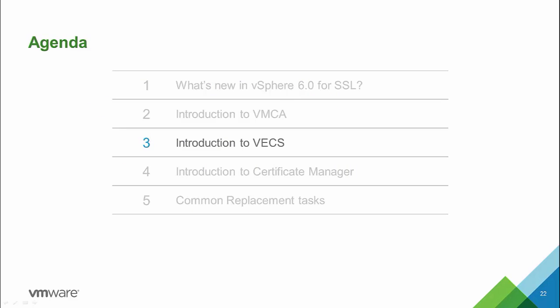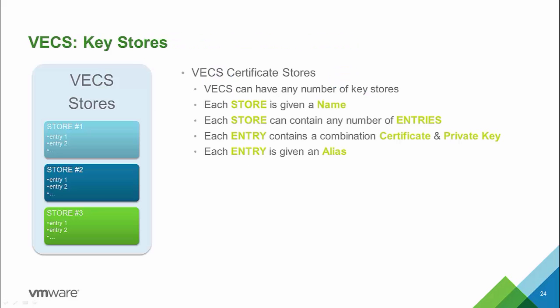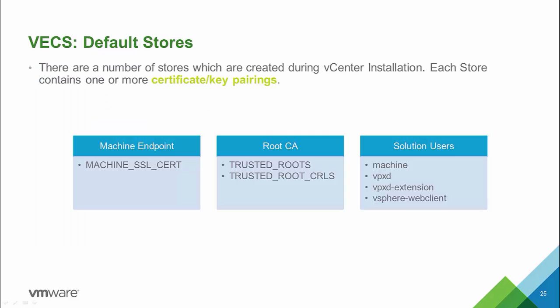Next is the VMware Endpoint Certificate Store, which is mandatory for vSphere to function. It runs as part of the authentication framework VMAFD and is purpose-made as an internal repository for certificates and private keys. It is installed on embedded nodes, PSCs, and management nodes. VECS operates on the principle of key stores — it can have unlimited key stores, each given a name and containing any number of entries. Each entry contains a combination of a certificate and its related private key, and each entry is given an alias. For vSphere to function, default stores include the machine SSL certificate store, trusted roots, trusted root CRLs, and solution users for the machine, VPXD, its extensions, and the web client.